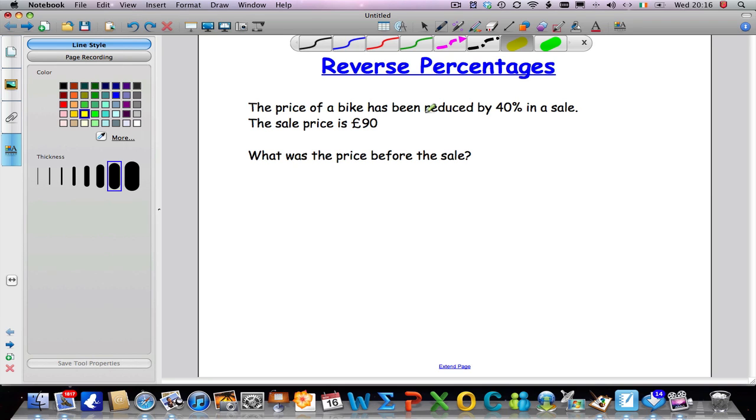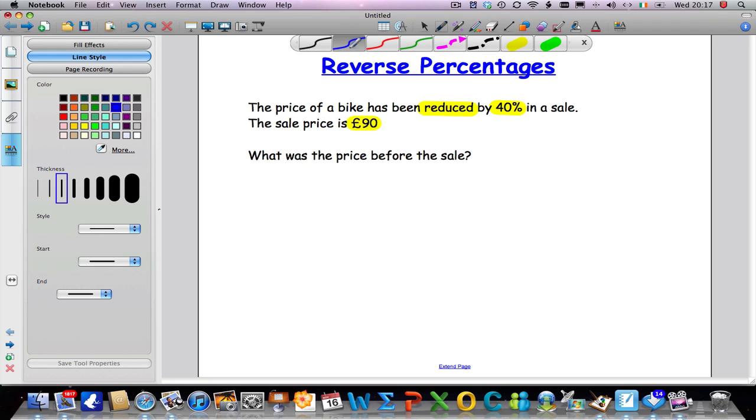It tells me the price of a bike has been reduced by 40% in a sale. The sale price is £90 and we're asked to work out what the price was before the sale. Now just looking at this question here, the important information I can see is that it's been reduced by 40%. And it also tells me that the new price is £90.